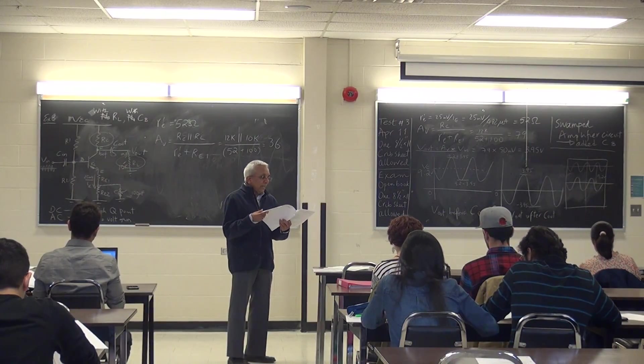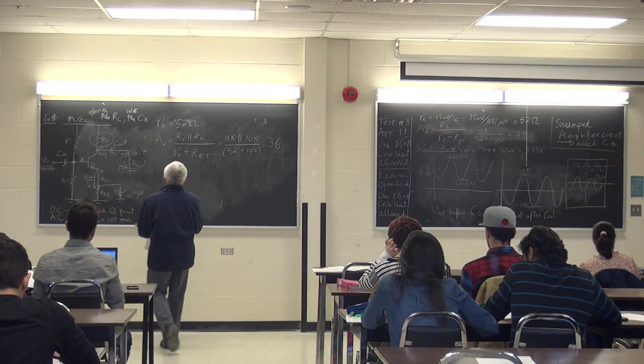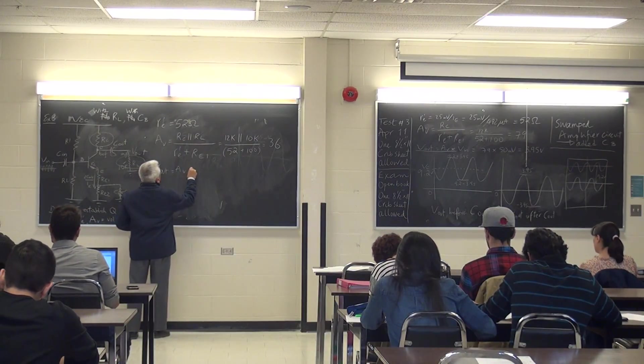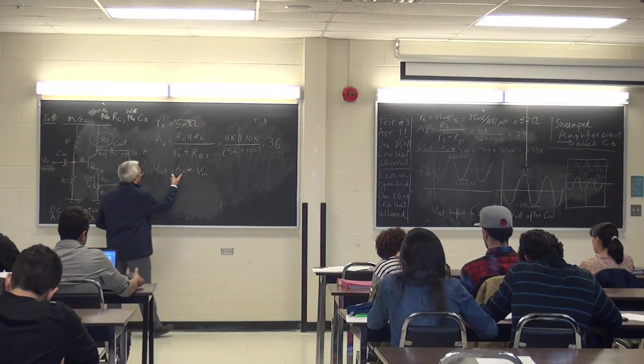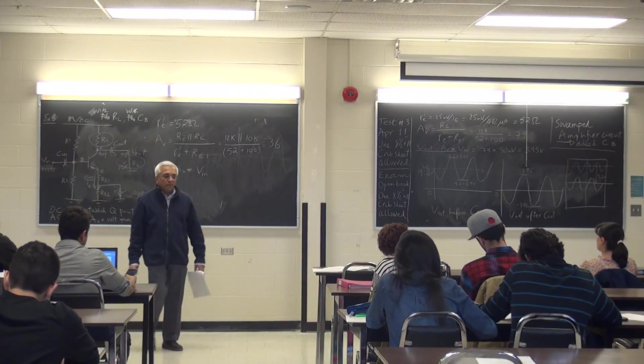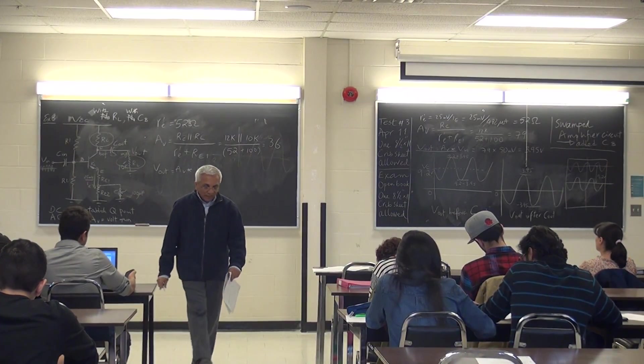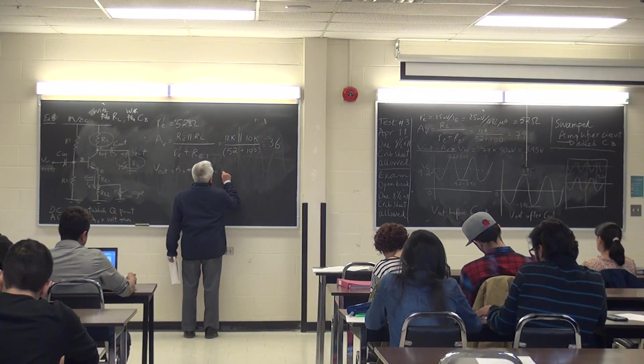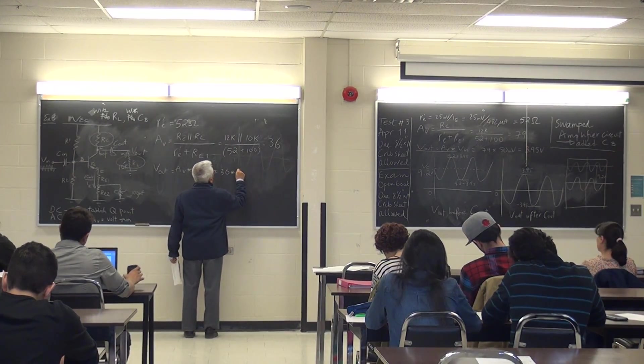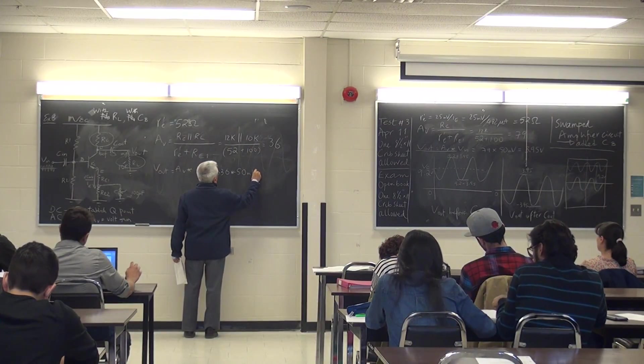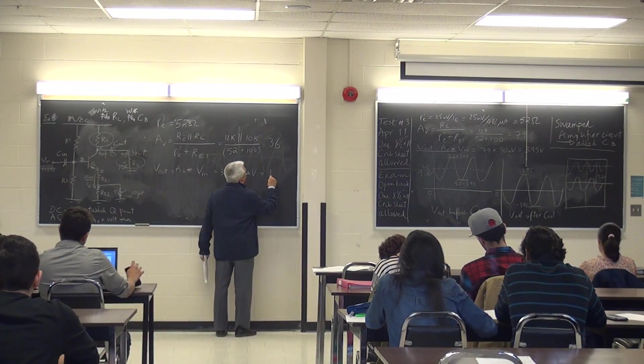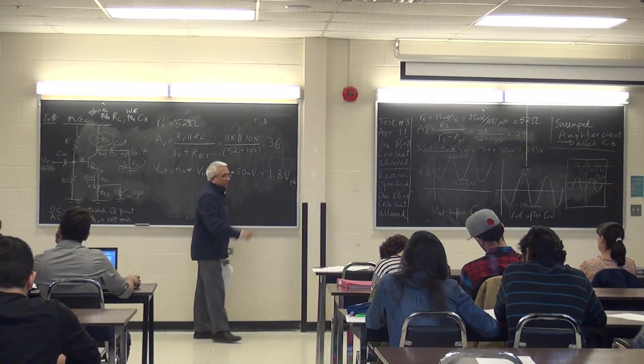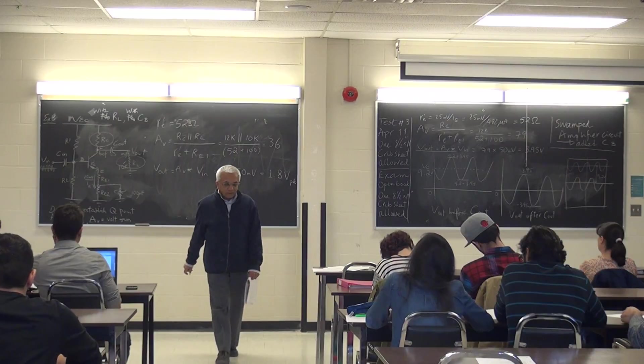So now let's calculate V out. V out is AV times V in. AV which is gain is V out over V in, and that's how we find V out. So that's 36 times 50 millivolts, which is how much? 1.8 volts peak. 50 millivolts is peak.